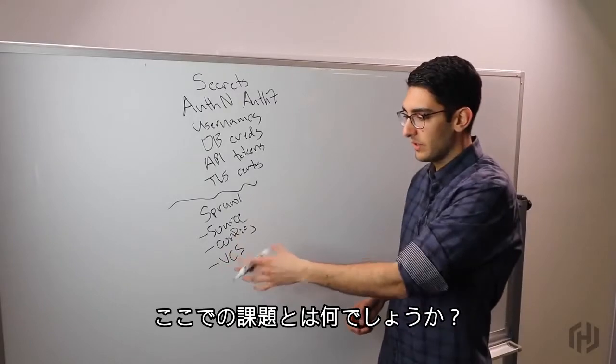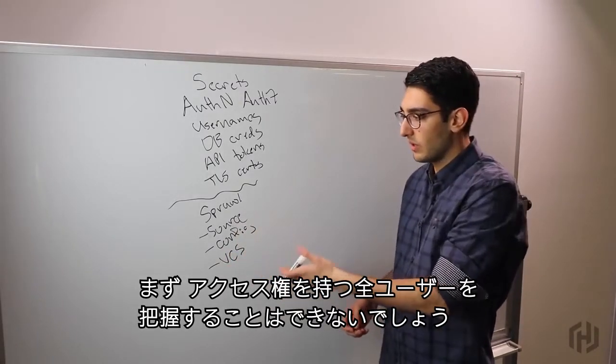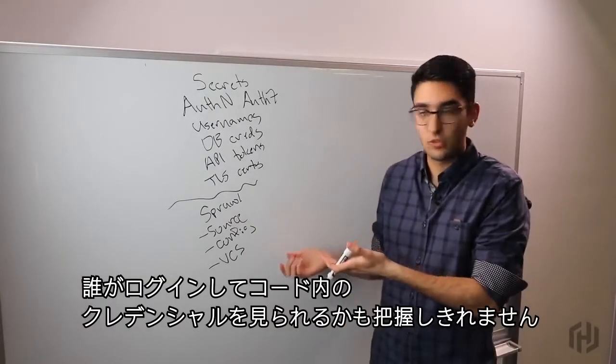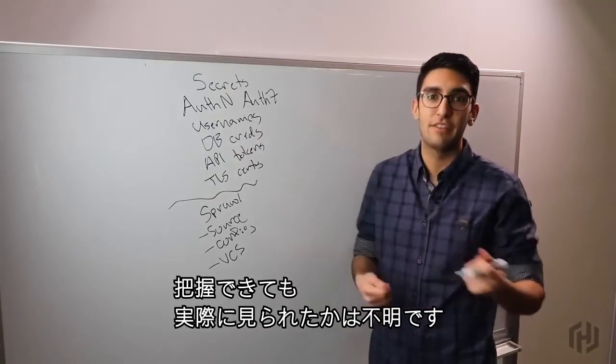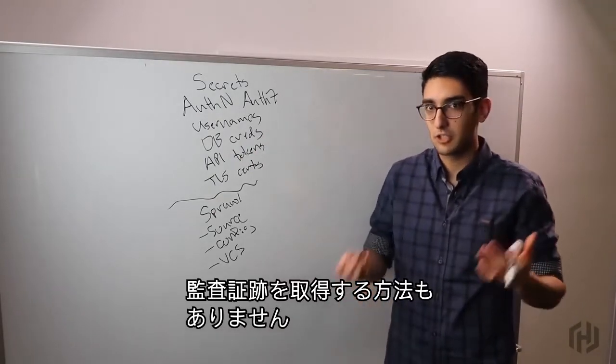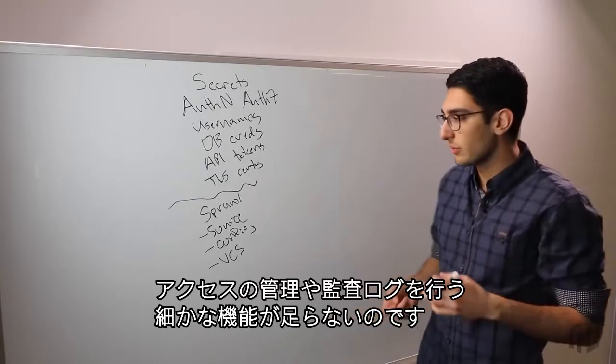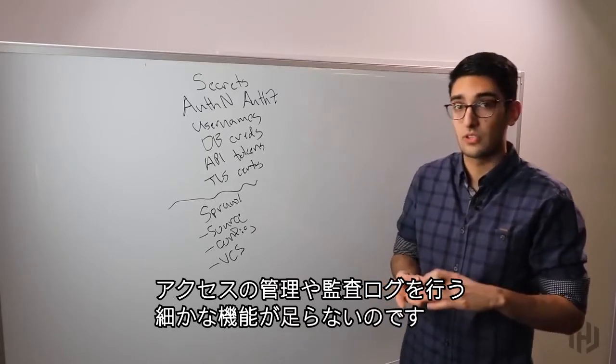So what are the challenges with this world? Well, we don't really know who has access to all of these things. We don't know, does anyone in our organization with access to GitHub, can they log in and see the source code and thus see what our database credentials are? And even if they could do it, we don't know if they have done it. We have no audit trail.